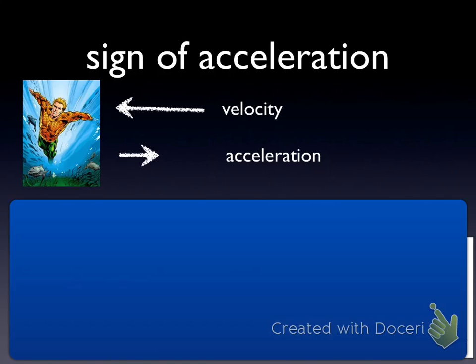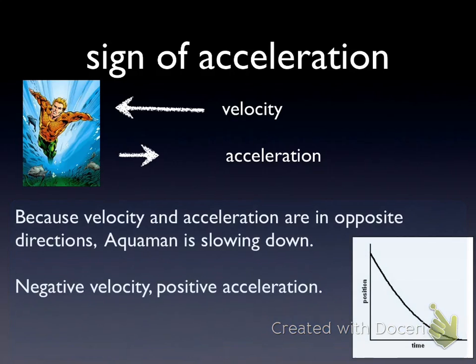Finally, let's look at the last possible case with Aquaman. He's got a negative velocity and a positive acceleration. What is happening to his motion? Aquaman will slow down because velocity and acceleration are going in opposite ways. In this case, he has a negative velocity and a positive acceleration, which you can see on the graph because the slope of the function is getting smaller. Eventually, he comes to a stop at that point. His velocity is zero.